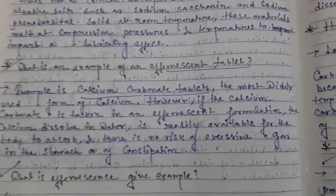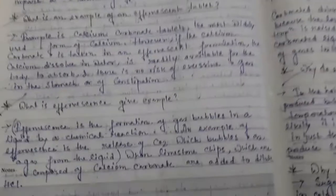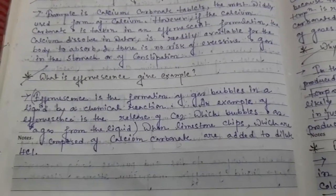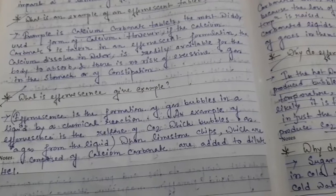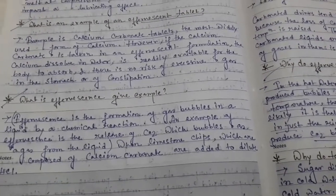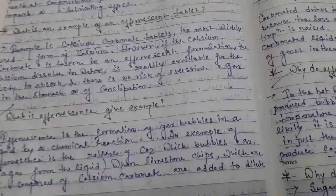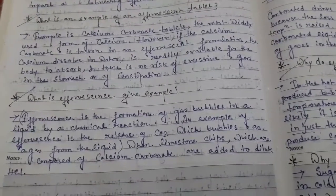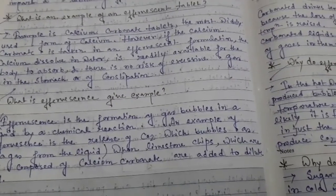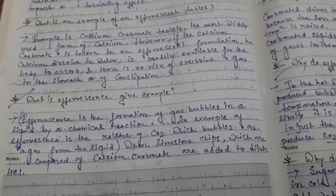What is an example of effervescence? An example of effervescence is the formation of gas bubbles in a liquid by a chemical reaction. When gas bubbles are formed in the liquid by a chemical reaction, that is called effervescence. An example is the release of carbon dioxide, which bubbles as a gas from a liquid.